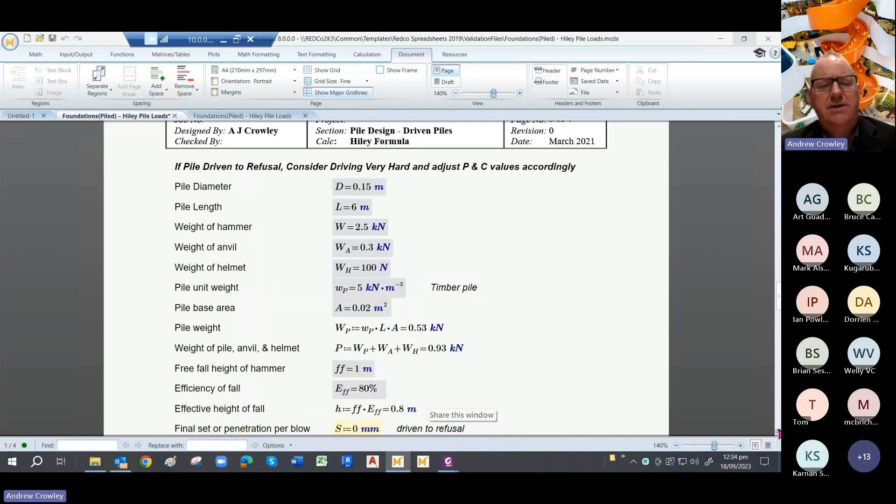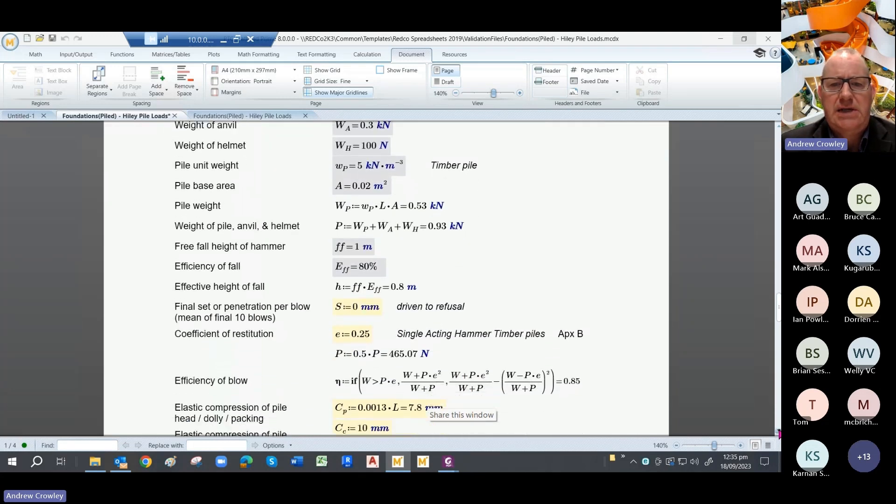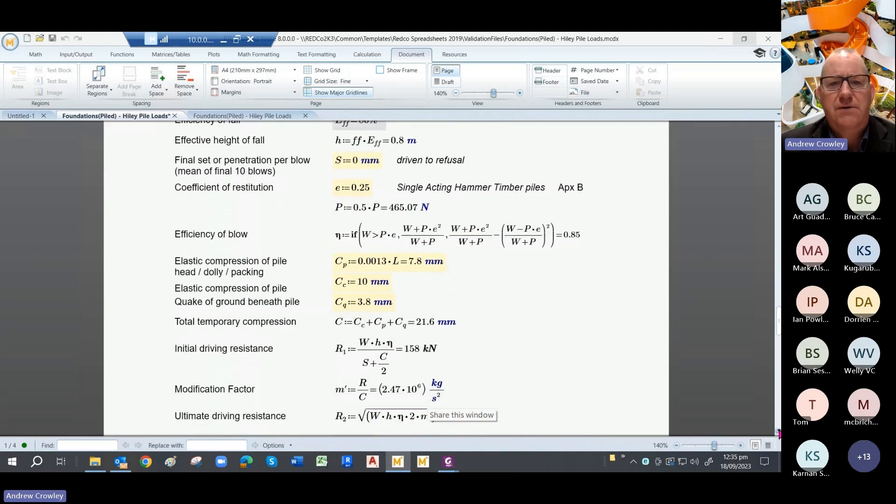The calculation changes if you're driving it to refusal, and so says the code of practice. And we bring back the basic parameters. So we've already stated them before, so my convention is to put restated parameters in grey. This time you're looking at a different set. So in theory, your set is zero, so it's driven to refusal. Now if you put that in the formula, you'll end up with an error, so you have to change the formula slightly.